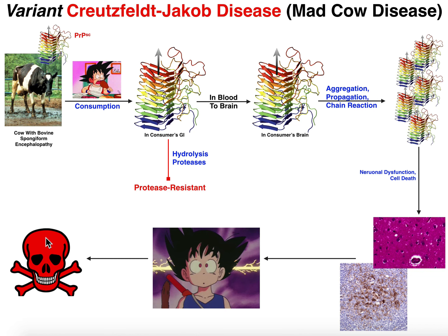Hopefully in this video you learned a little something about mad cow disease and how it can lead to variant Creutzfeldt-Jakob disease, how transmission is not 100%, and the difference between the two: mad cow disease is the form in cows, while variant Creutzfeldt-Jakob disease is the form in humans that's transmittable from cows. Please make sure to like this video and subscribe to my channel for future videos and notifications. Thank you.